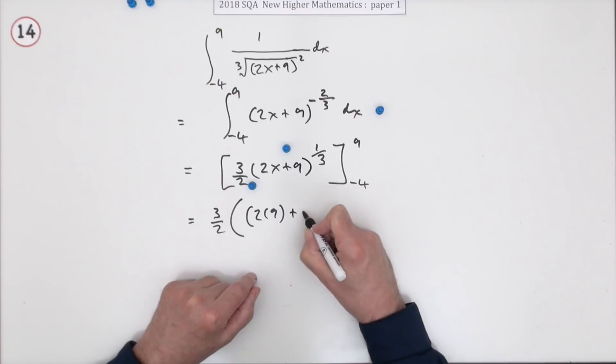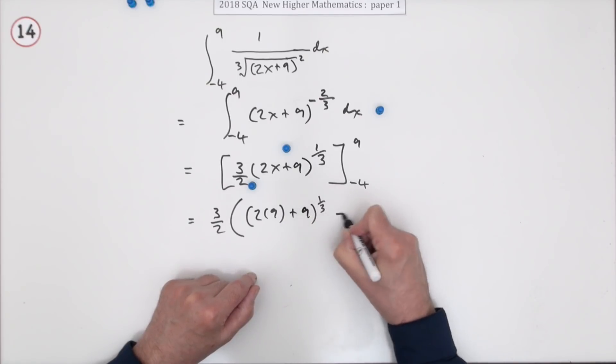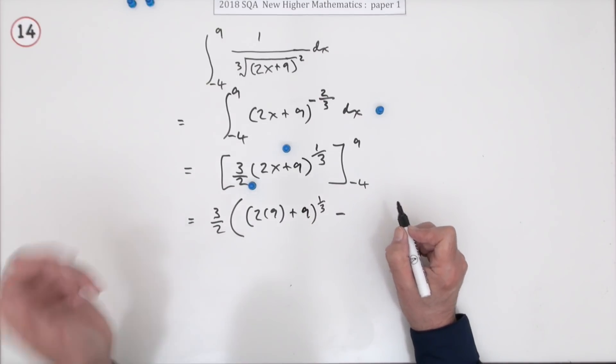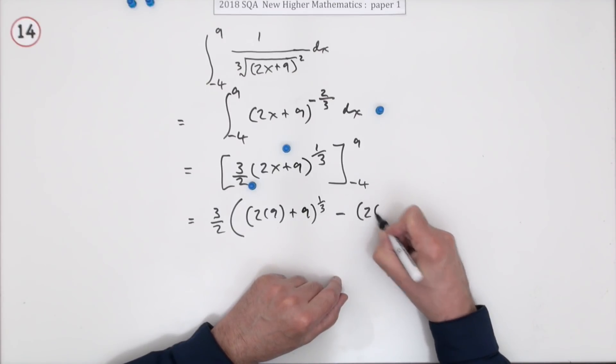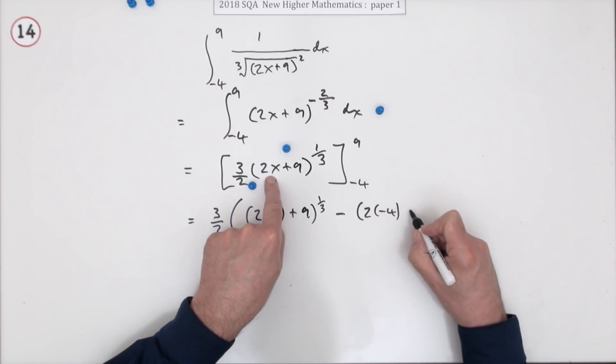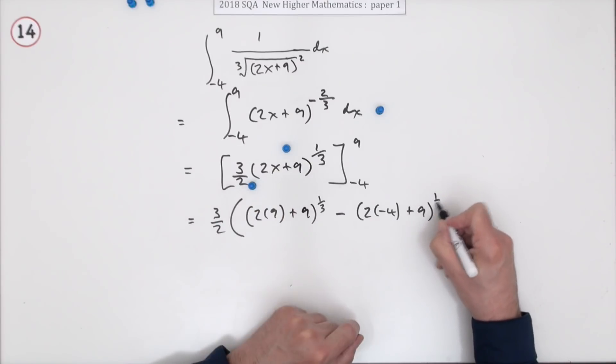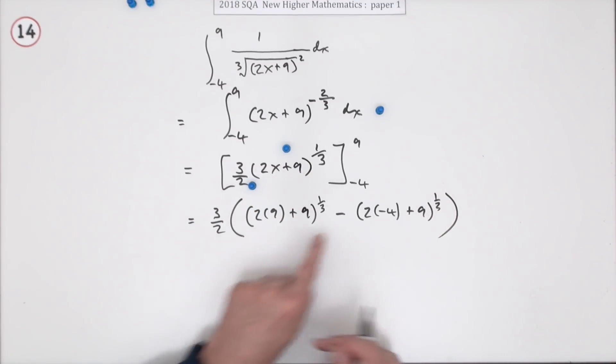I'll show this bit: so it's two nines and a nine, to the power of a third, take away - again it would be three upon two but I'm just going to take it out of it - but now it's two negative fours, two times negative four plus nine, to the third.